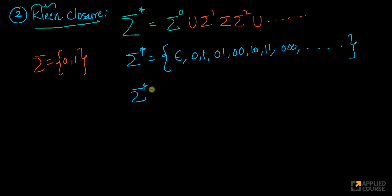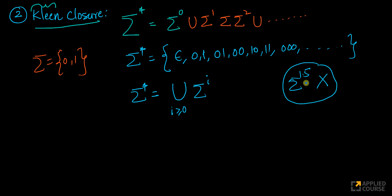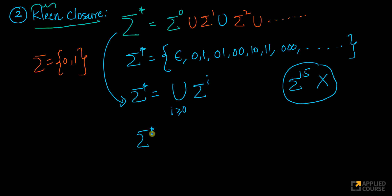In the previous video we did not define sigma star this way because we hadn't defined the power of an alphabet yet. Now we can. Sigma star can also be written as the union of sigma power i where i is greater than or equal to 0, where i is an integer. Sigma power 1.5 is a meaningless concept as far as alphabets are concerned.